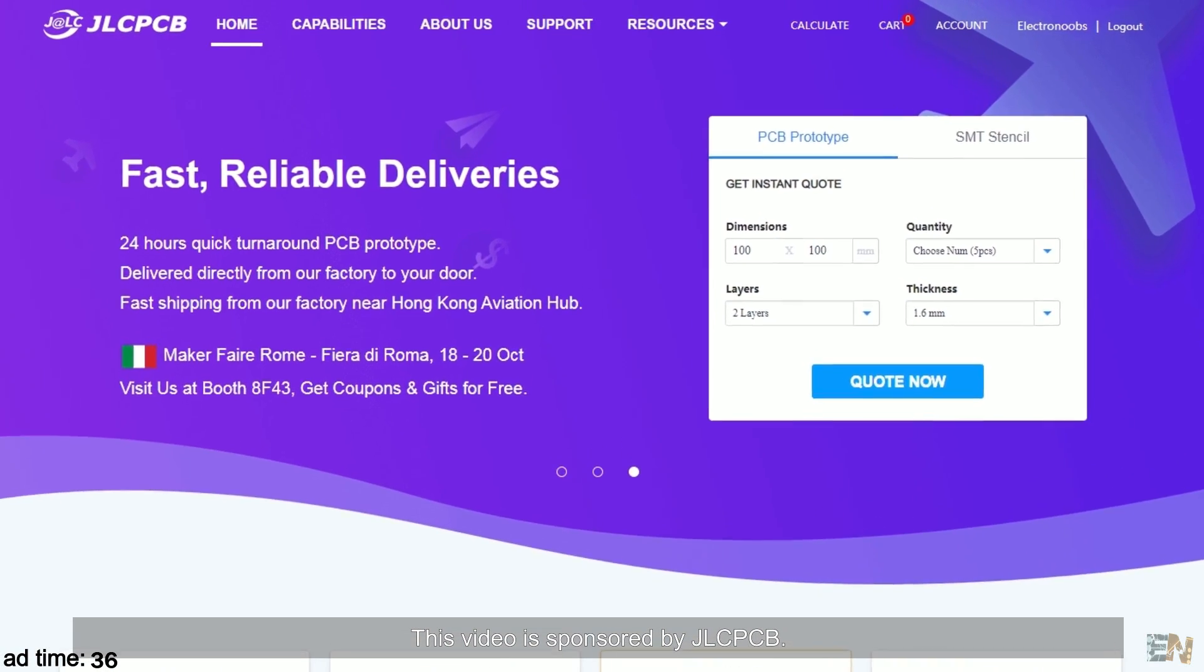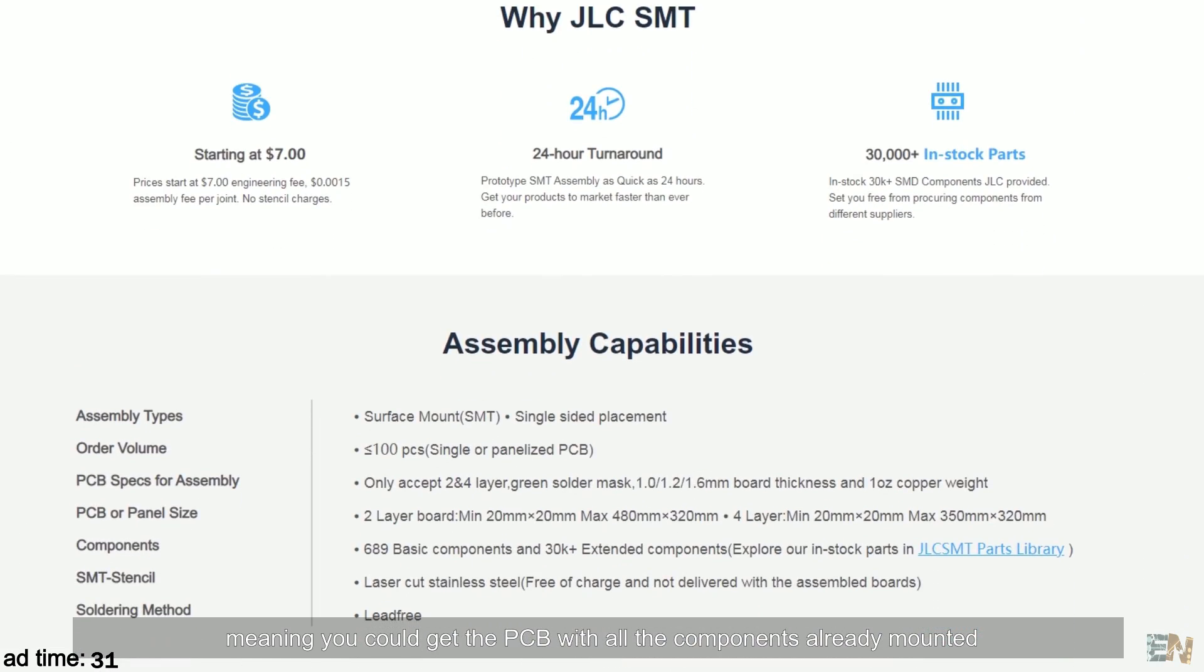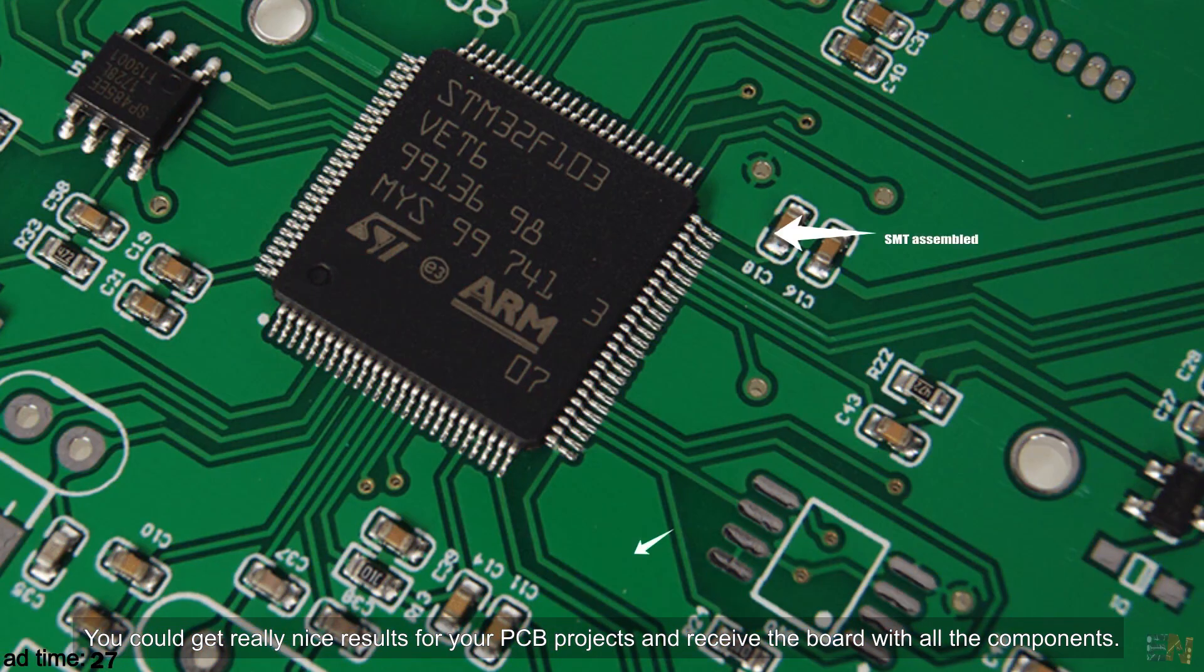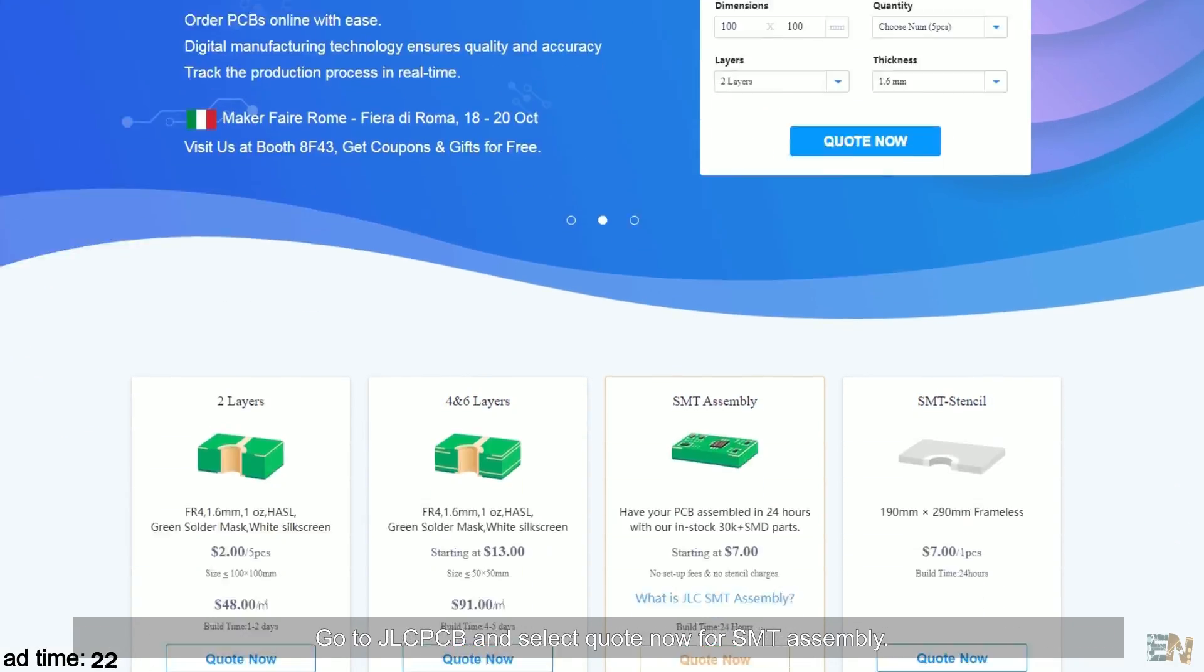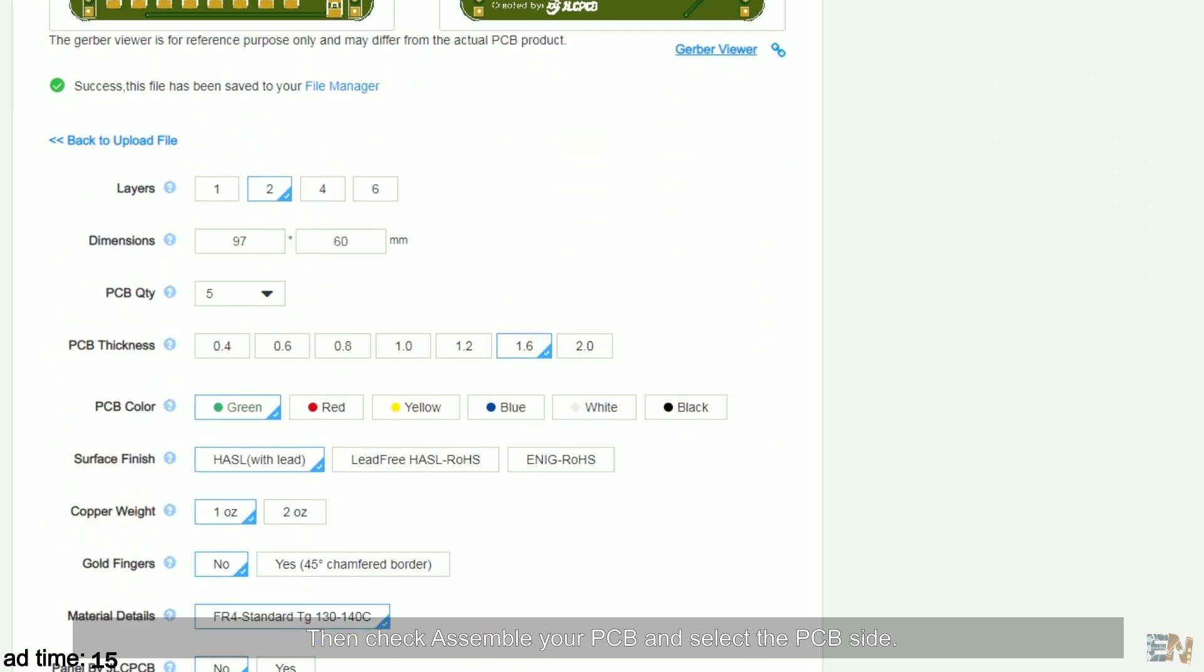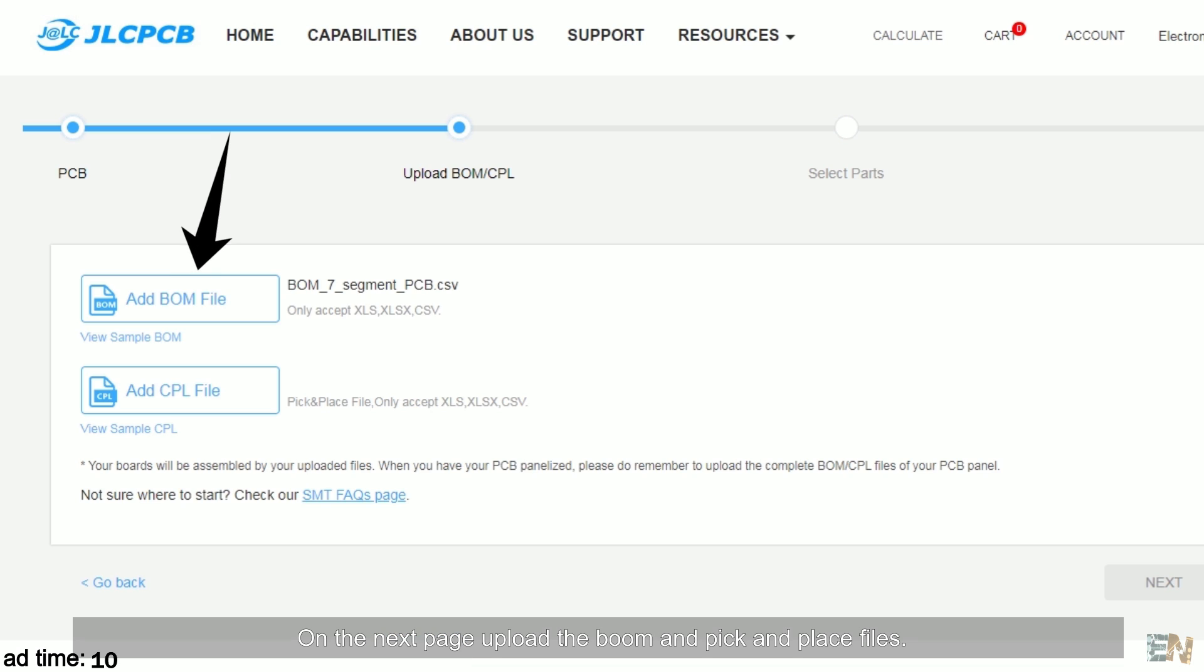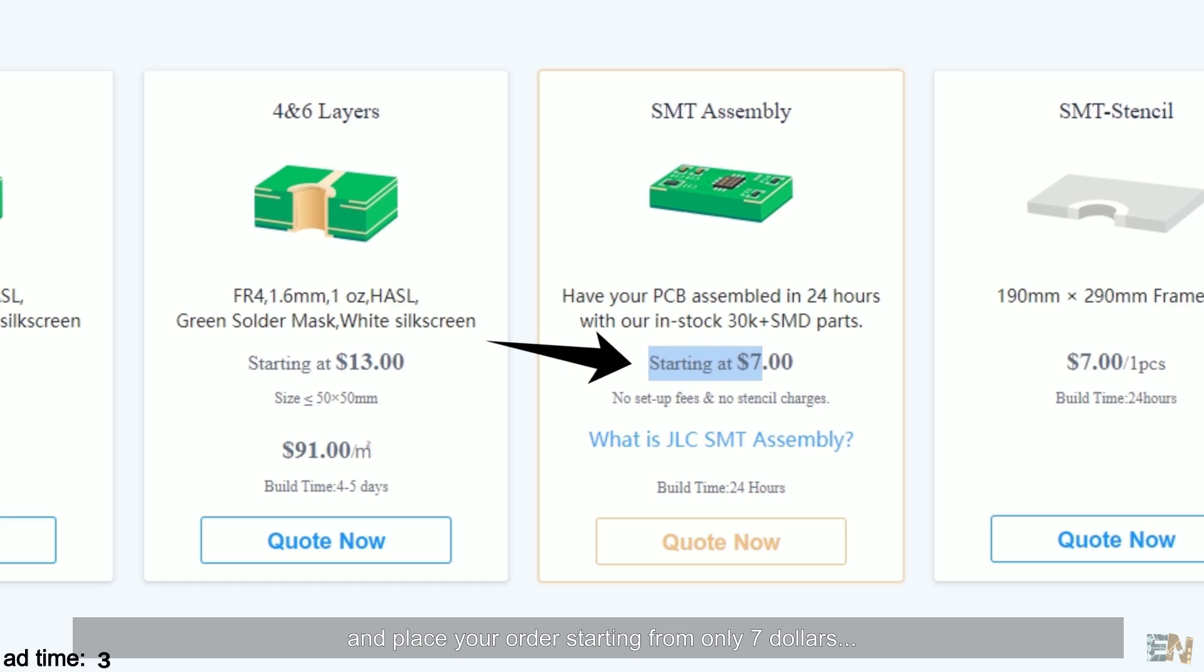This video is sponsored by JLCPCB. They now have an SMT service, meaning that you could get the PCBs with all the components already mounted. You could get really nice results for your PCB projects and receive the board with all the components. Go to JLCPCB and select order now for the SMT assembly. Upload the Gerber files of the PCB. Then check assemble your PCB and select the PCB side. On the next page upload the BOM and the pick and place files. Finally confirm the components you want to solder on your PCB and place your order starting from only seven dollars.